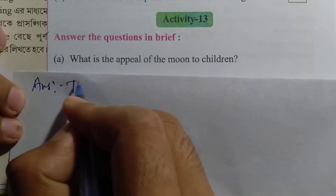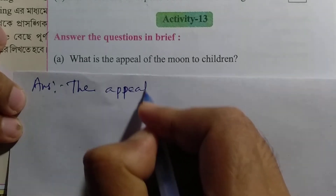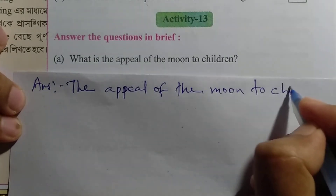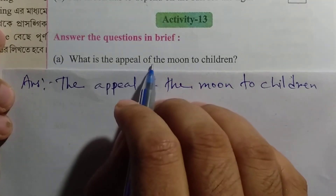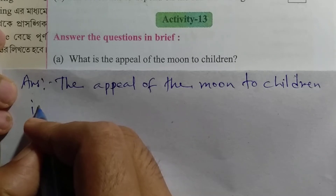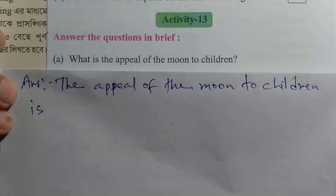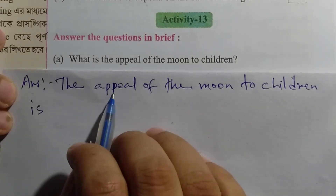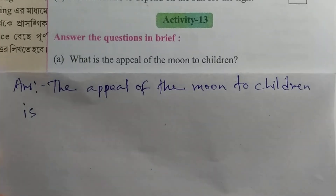The appeal of the moon to children: the moon's appeal to children is its shining presence in the sky. Its size is not the most important aspect of the story.